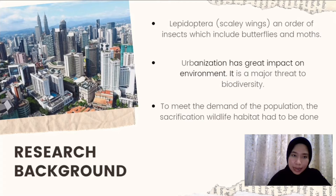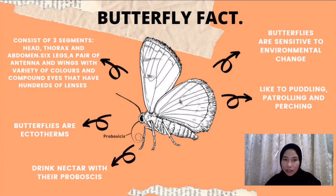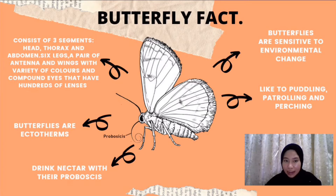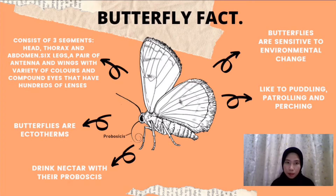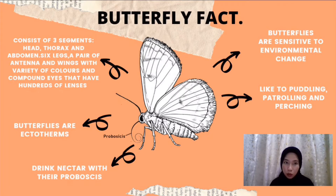Why does this happen? It is because urbanization activity today has brought major threats to biodiversity. Butterfly consists of three segments which are the head, thorax and abdomen, six pairs of legs, a pair of antennae, and wings with a variety of colours, along with a compound eye that has hundreds of lenses.